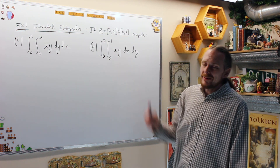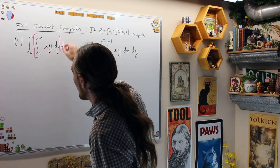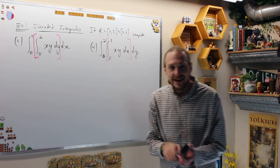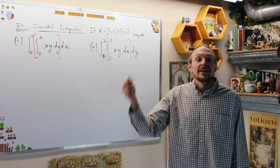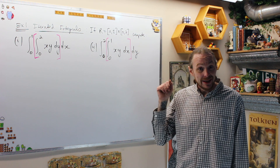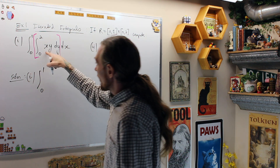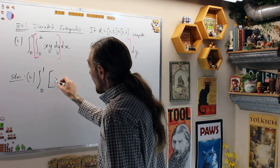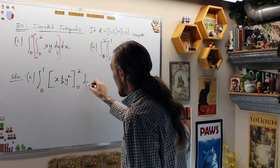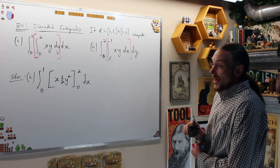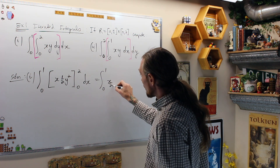Example 1: we're going to compute this iterated integral two ways. We have the same integrand in both cases. Put some brackets in to help yourself — the brackets help you focus on the inner integral. In the first one, I ignore dx, hold x constant, and integrate with respect to y. When I do that, I have the integral from 0 to 1 of: holding x constant and integrating y gives me x times one-half y squared, evaluated from 0 to 2, by the Fundamental Theorem of Calculus Part 2, dx.